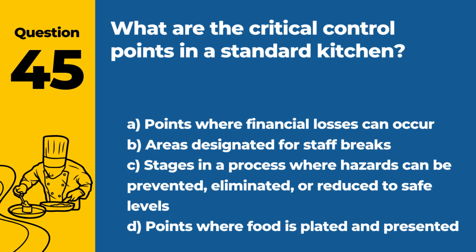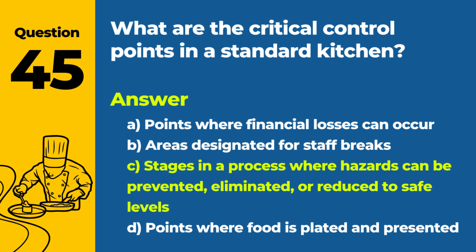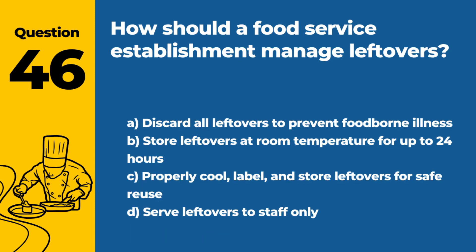Question 45: What are the critical control points in a standard kitchen? a. Points where financial losses can occur. b. Areas designated for staff breaks. c. Stages in a process where hazards can be prevented, eliminated, or reduced to safe levels. d. Points where food is plated and presented. Answer: c. Critical control points in a standard kitchen are specific stages in the food handling process where potential hazards, such as microbial growth, can be effectively controlled to ensure food safety.